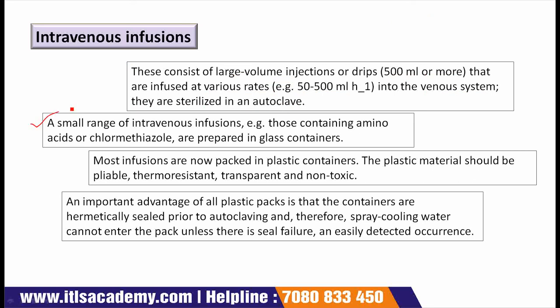A small range of intravenous infusions — for example, those containing amino acids or chloromethiazole — are prepared in glass containers. Although bottles are sterilized by autoclaving, it is still possible for the infusion in glass bottles to become contaminated with microorganisms before use.